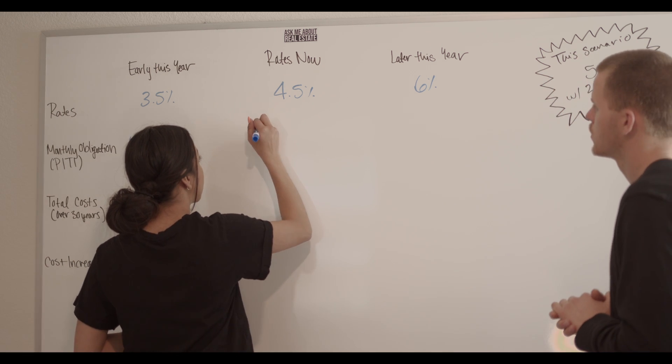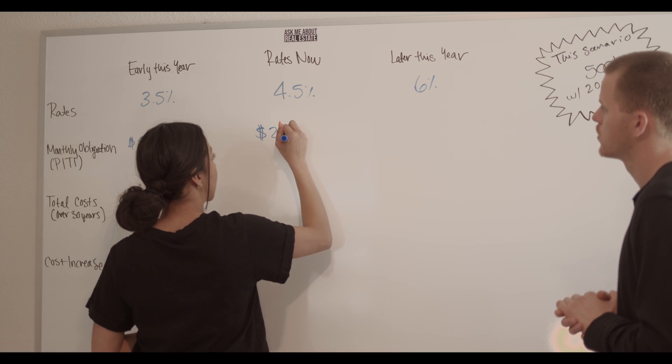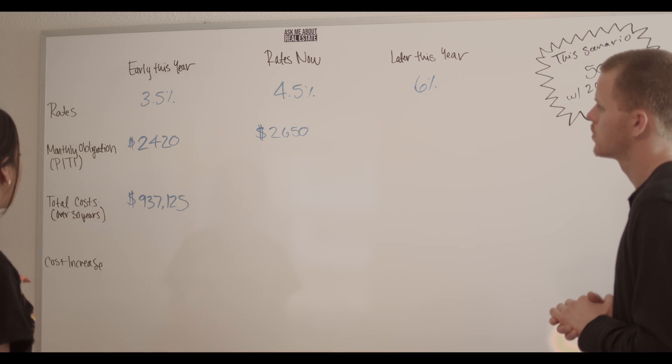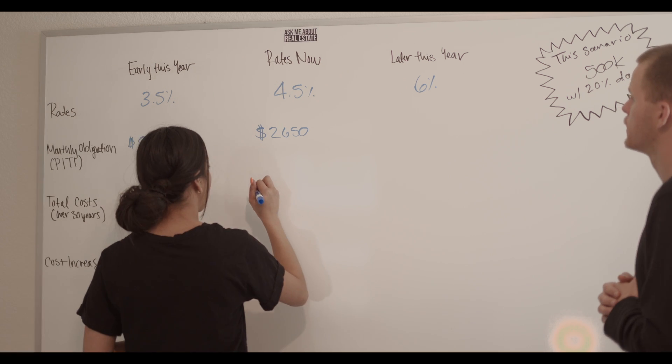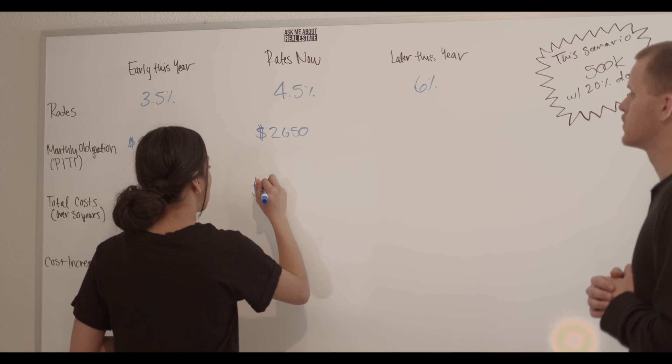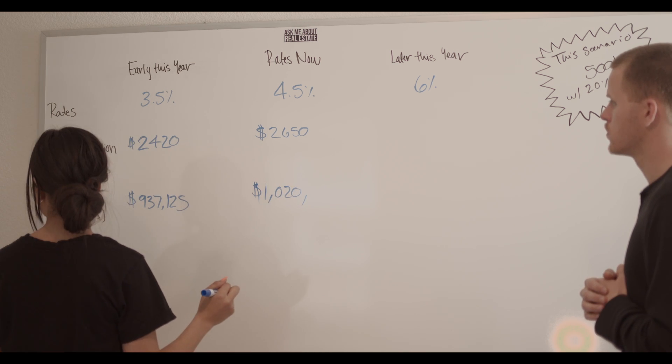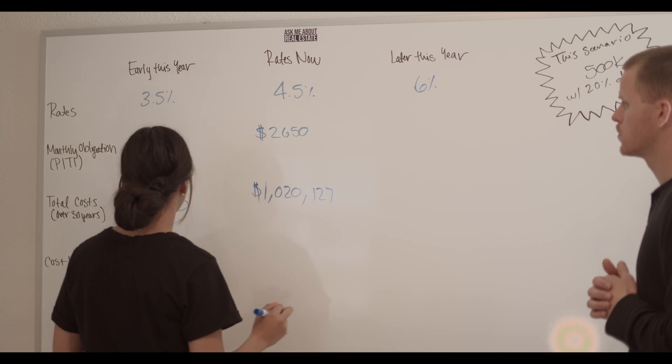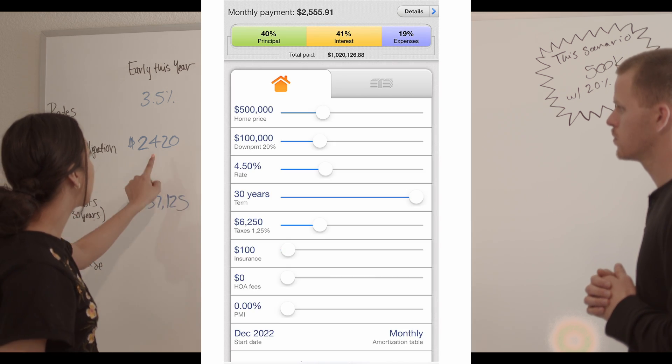...then monthly payments would be around $2,650. And over the course of 30 years, what they would be paying in interest goes up as well to about $1,020,127. Again, a little bit of rounding. So we're already seeing that difference there.